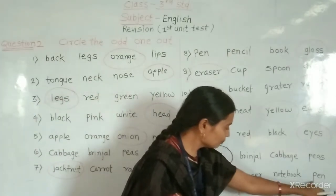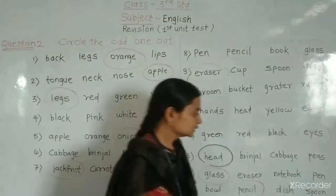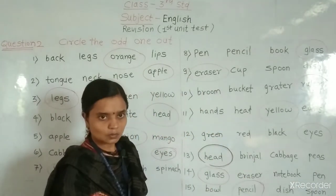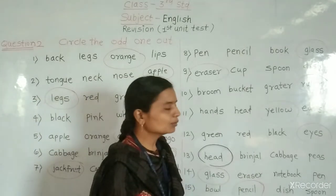And half lakaya cell odd word. And cell next 14 number. Glass, eraser, notebook, pen. Eraser, notebook, pen. These are the things we use in our school or study purpose.